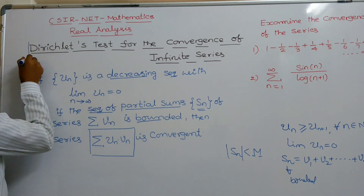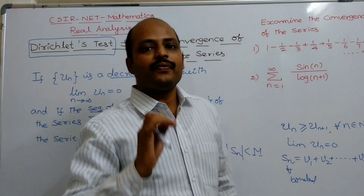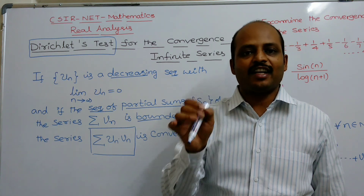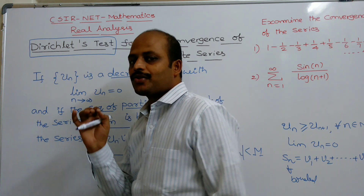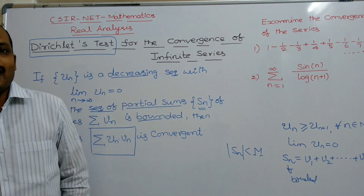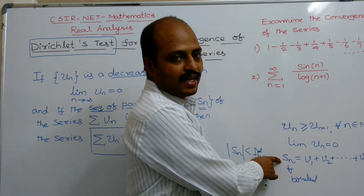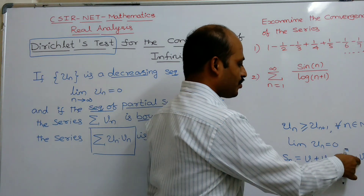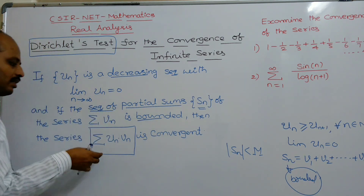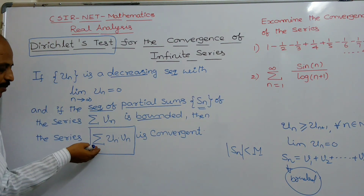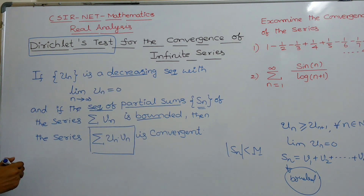This is known as the Dirichlet test. To summarize the statement: if UN is a sequence of decreasing terms, limit as N tends to infinity of UN equals 0, and SN — the nth partial sum of the infinite series VN — is bounded, then summation UN times VN is convergent.